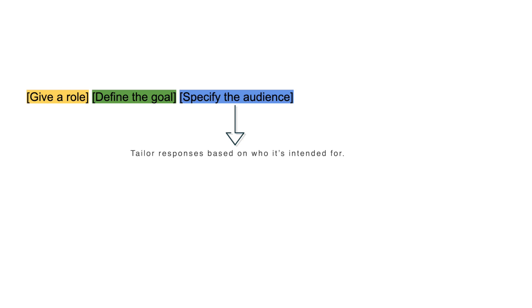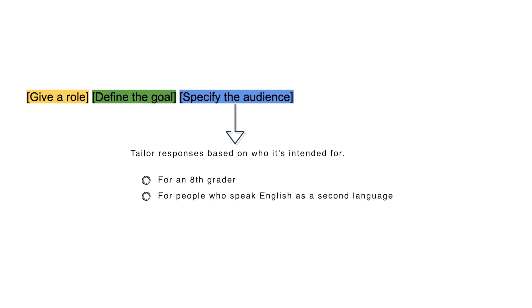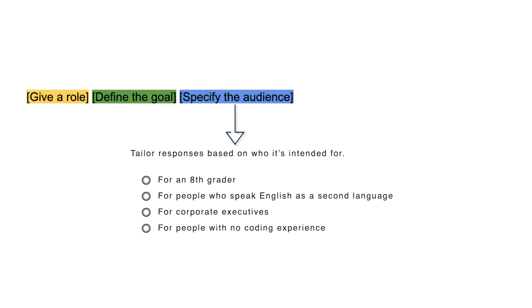Next in the prompt formula is to specify the audience — this is another nice-to-have. When you specify your audience, it helps your LLM tailor responses based on who the content is intended for. Think things like: for an 8th grader, for people who speak English as a second language, for corporate executives, or for people with no coding experience.